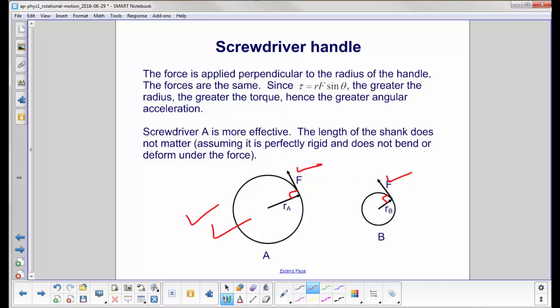Again, we have to assume it's perfectly rigid, it does not bend or deform under the force. That's what we do basically in high school physics. We make a lot of simplifications. But, as long as the shank isn't bending, you will want to choose a screwdriver with a bigger diameter handle.